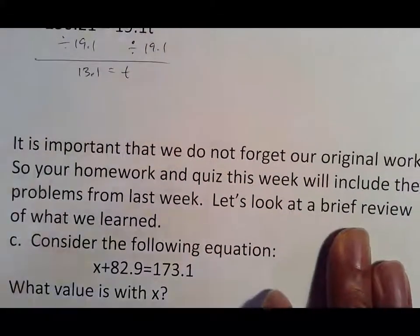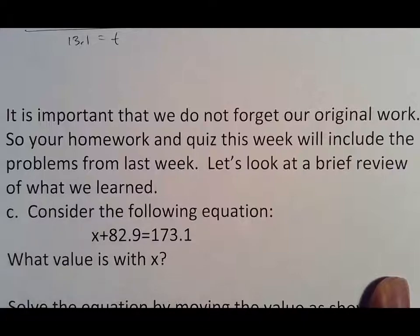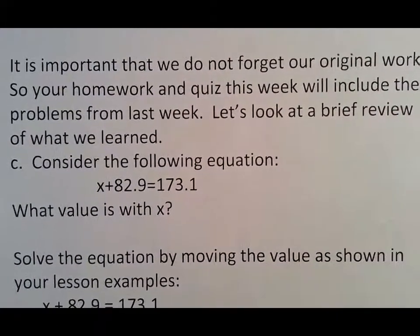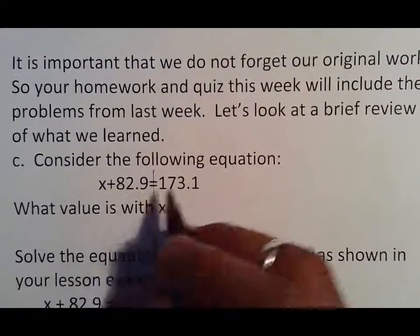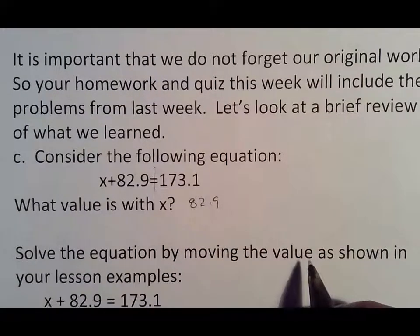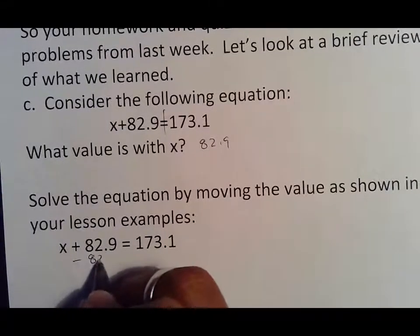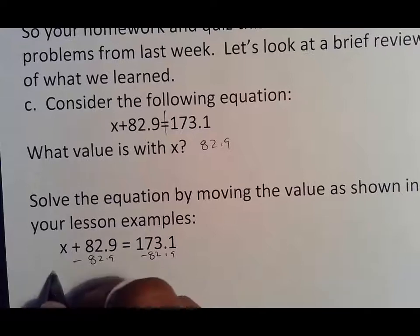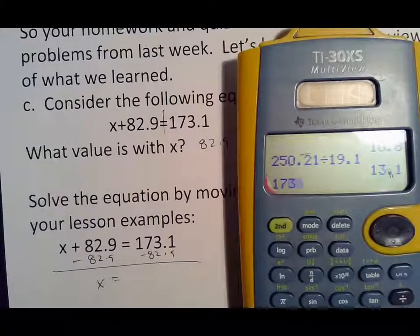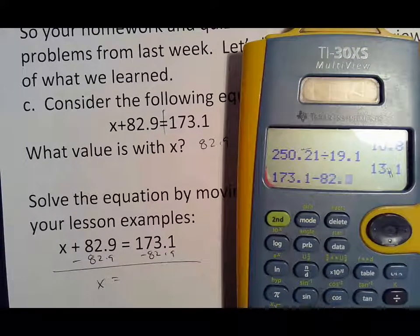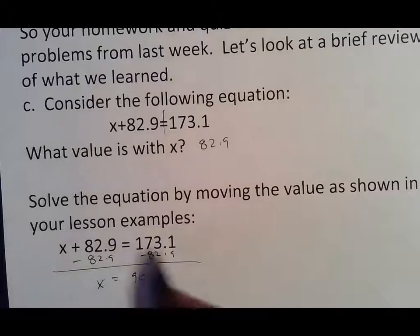It's important that we don't forget our original work. So your homework and quiz this week will include the problems from last week and a real quick review of what we've learned. Where it said X plus 82.9 equals 173.1. The value with X is 82.9. How do you move this 82.9 if it's being added? The opposite of addition is subtraction. And so we will bring down X and figure out whatever 173.1 minus 82.9 is, which is 90.2.